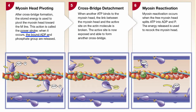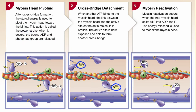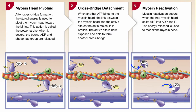As this power stroke occurs, the myosin heads release ADP and phosphate. A new ATP molecule is then required to disconnect each myosin head from the active site, detaching the cross bridge. This new ATP molecule is quickly split into ADP and phosphate, re-energizing the myosin head for another cycle.